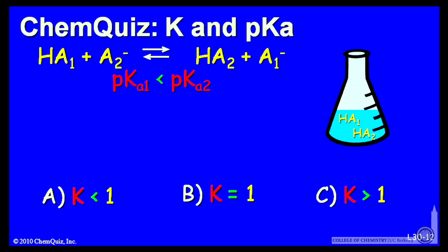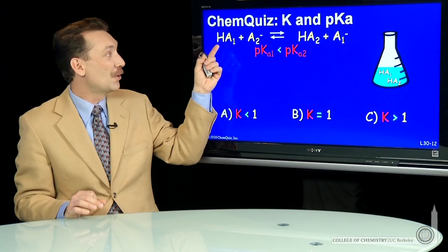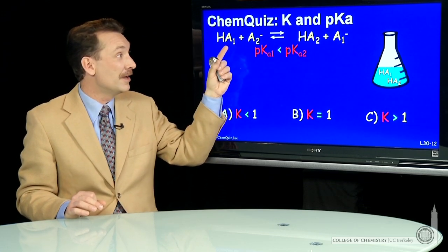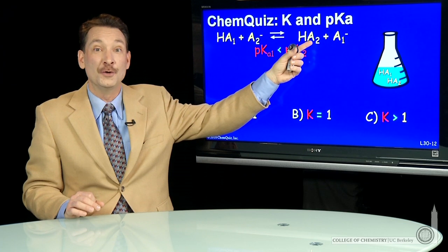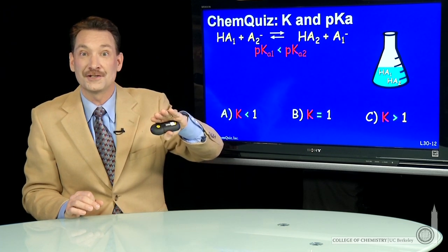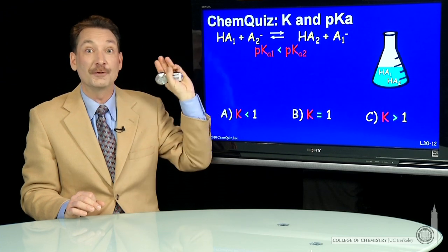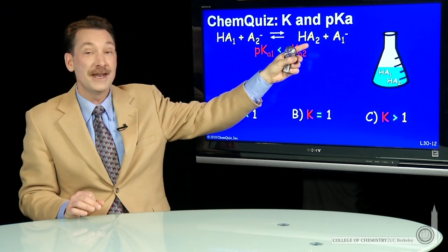That means acid HA1 is the stronger acid. A smaller pKa, stronger acid. So HA1 is the stronger acid. So if it's HA1 versus HA2, which will have the higher concentration in solution? Well, HA1 is the stronger acid. It will dissociate more than HA2.